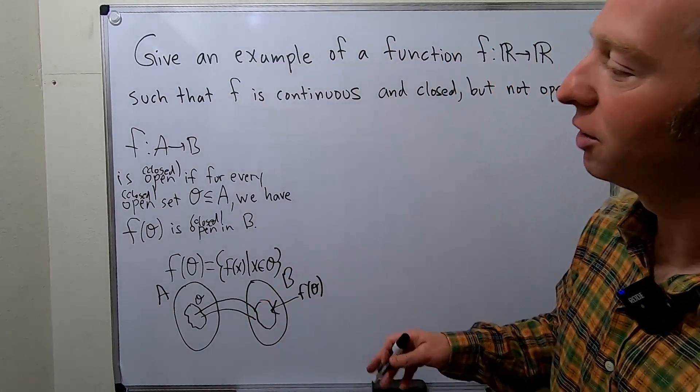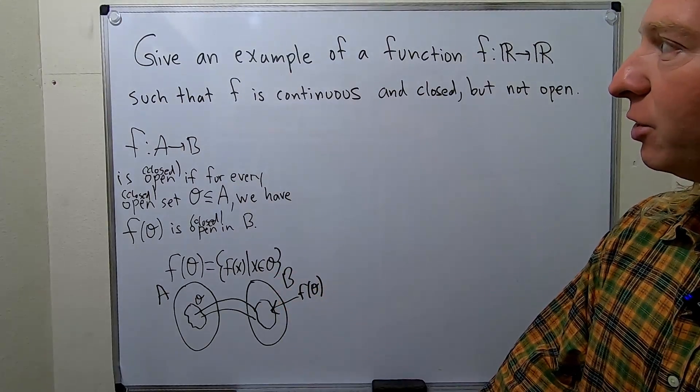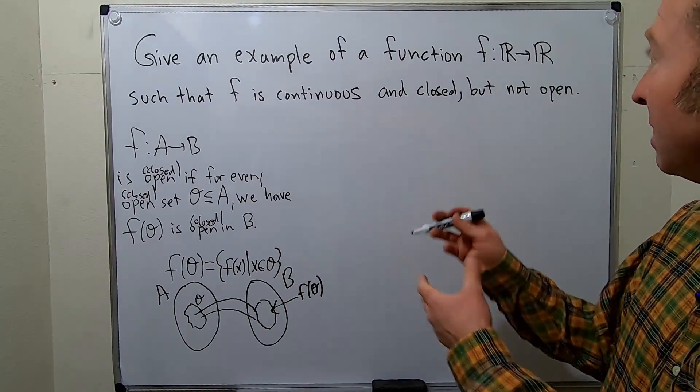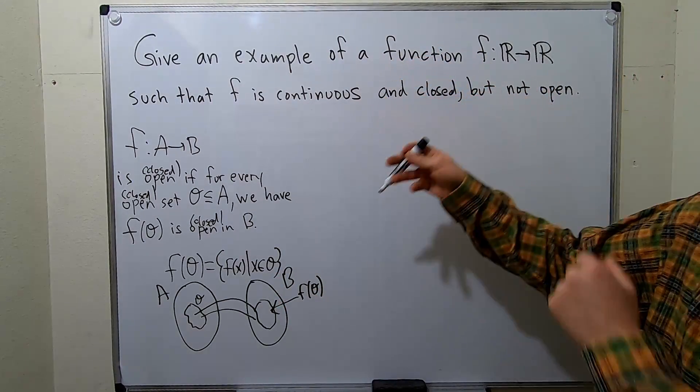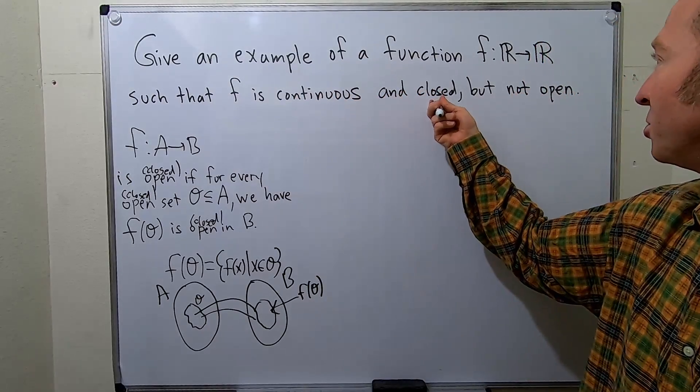So this does require some background. So I'm kind of assuming you're familiar with this. Let's keep going. So let's give an example of a function now that is continuous and closed, but not open.